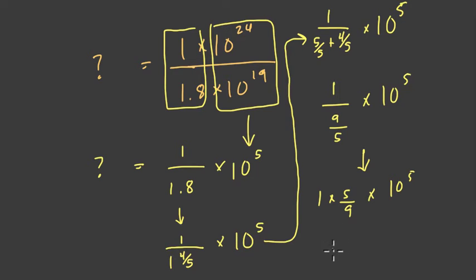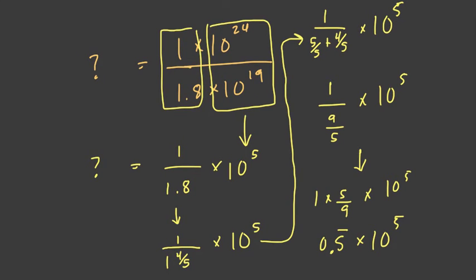Now what's 5 ninths? 5 ninths is 0.5 repeating. Ninths are awesome because if you've never seen this pattern before, 1 ninth is .1 repeating, 2 ninths is .2 repeating, 3 ninths is .3 repeating and so on. So 5 ninths is .5 repeating. So this could be our answer, but let's write it in scientific notation.